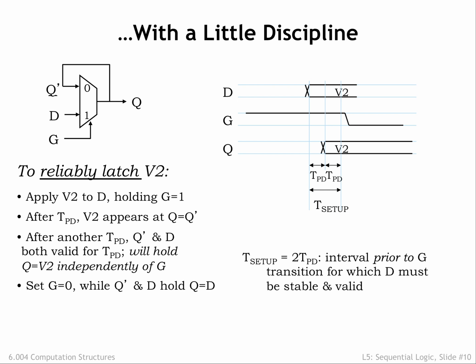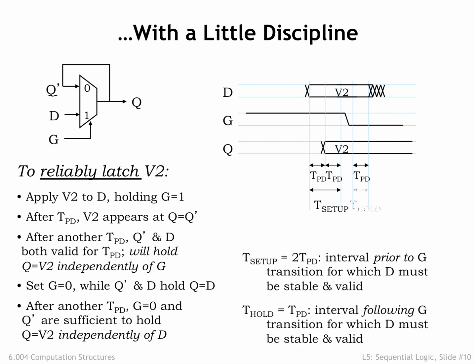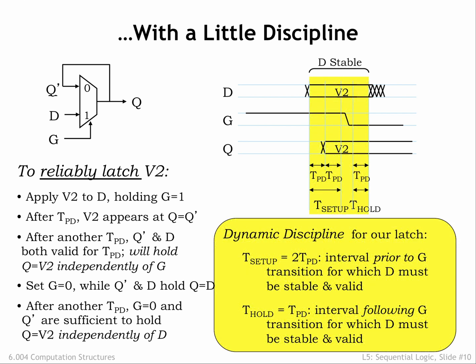Now we can set G to low, still holding D stable and valid. After another TPD to allow the new G value to propagate through the internal circuitry of the latch, we've satisfied condition 3, and the Q output will be unaffected by subsequent transitions on D. This further requirement on D stability is called the hold time of the latch — it's how long after the transition on G that D must stay stable and valid. Together, the setup and hold time requirements are called the dynamic discipline, which must be followed if this latch is to operate correctly.